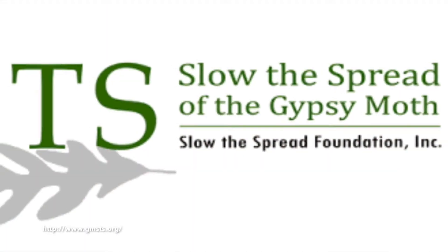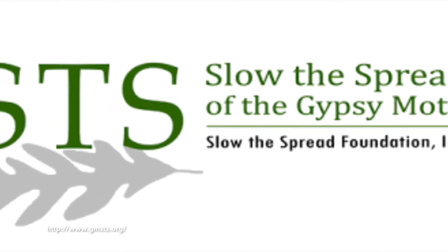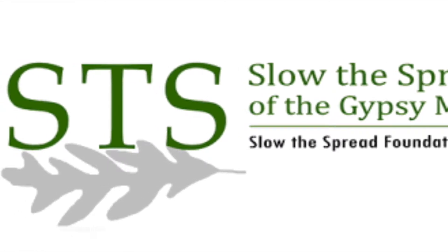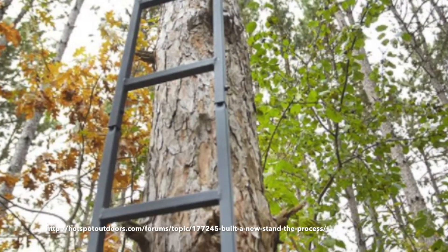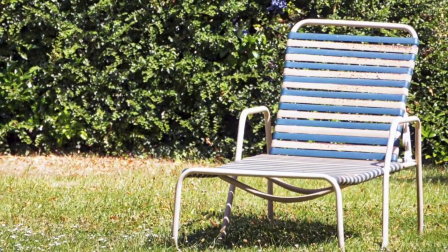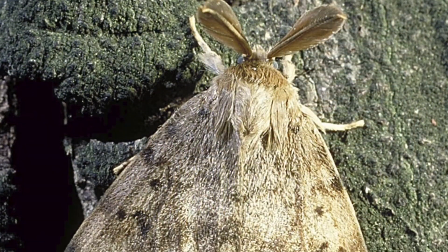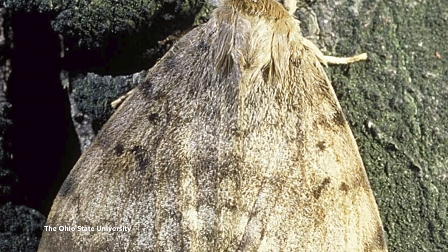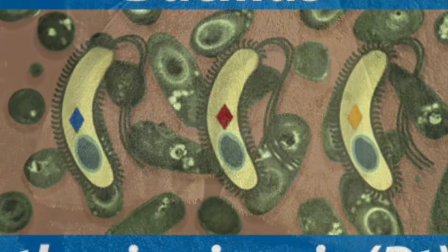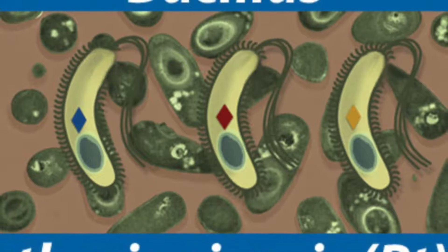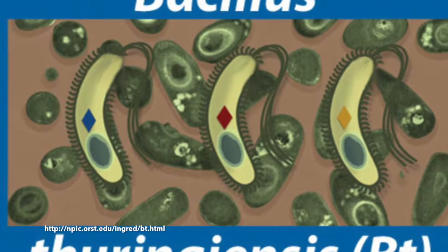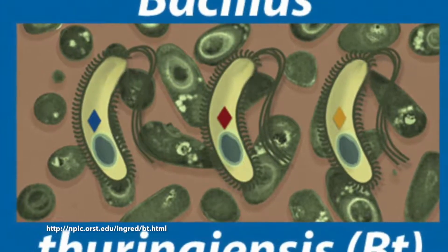Gypsy Moths are also managed on a large scale by implementing slow-the-spread programs and limiting movement of firewood or objects such as ladders, mobile homes, lawn furniture, and equipment that may contain egg masses. When population densities are high, the safest and most effective tool for preventing widespread defoliation is aerial applications of an insecticide derived from the naturally occurring bacterium Bacillus thuringiensis, commonly known as Bt.